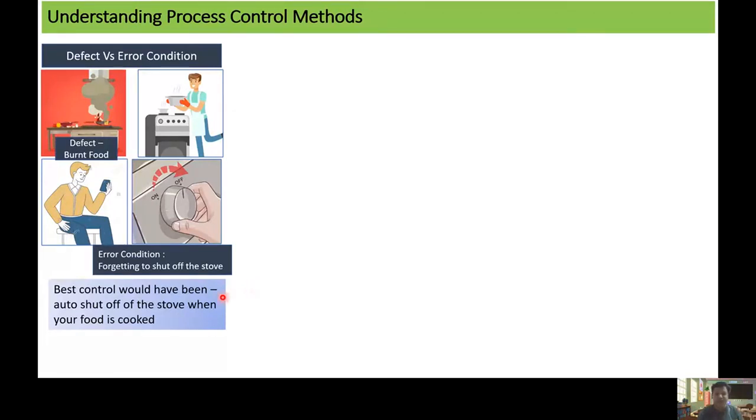Imagine you are cooking on a Sunday to help your wife or your mother and suddenly your phone rings. You spend time with your phone, you forget that something was on the stove, and then suddenly the food burns. So the burned food is the defect and the error condition is forgetting to shut off the stove. The best control in this case would have been if there was a process where the stove would have auto shut off when the food was cooked.